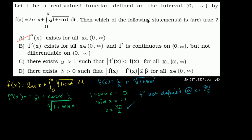Choice B says f prime of x exists for all x greater than 0 — that seems true since x equals 0 is not in the interval. And f prime is continuous on 0 to infinity with no obvious discontinuities. But it's not differentiable on 0 to infinity — we just showed the second derivative does not exist at x equals 3π/2. So f prime of x is not differentiable at 3π/2 because the second derivative is undefined there. Everything in Choice B is true.